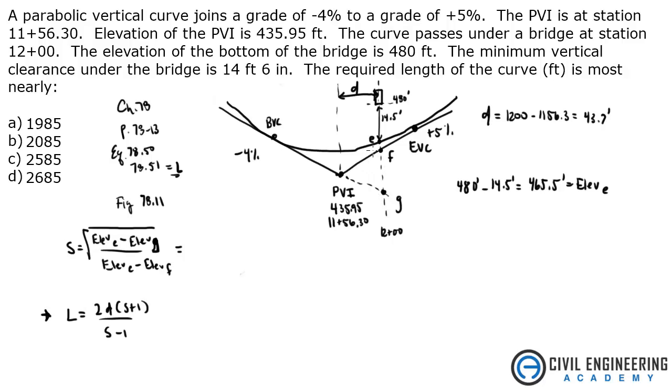Next thing we're going to do is to get point F, we know we are going up 5%. So 5% times 43.7 is going to give us 2.185 feet, and we just need to add that to the 435.95, which we know from PVI, plus the 2.185 feet. So point F is going to be 438.14. That is elevation of F.